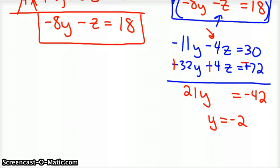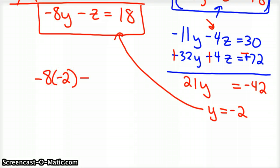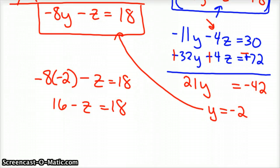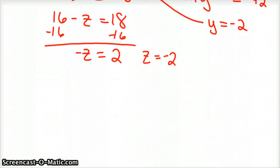So that's cool — we've got an answer. We know what y is. So now, if you take that negative two and plug it into one of your original equations — I'm just going to plug it into this one here — you'd have negative eight times negative two minus z equals eighteen. So sixteen minus z equals eighteen. Subtract the sixteen over, and negative z equals two. And so z is equal to negative two. Now we have two solutions; we know what y and z are for this system.